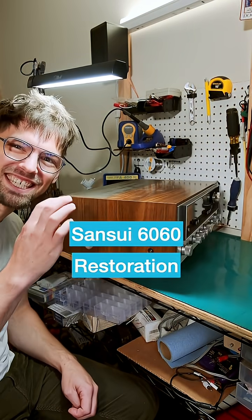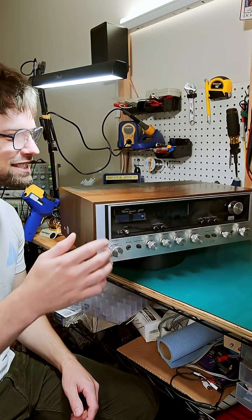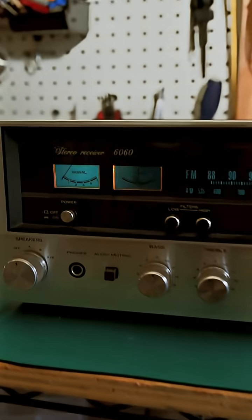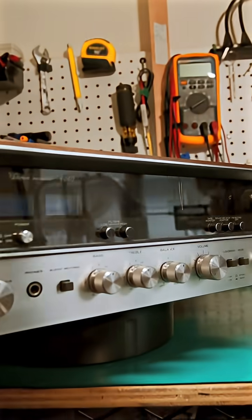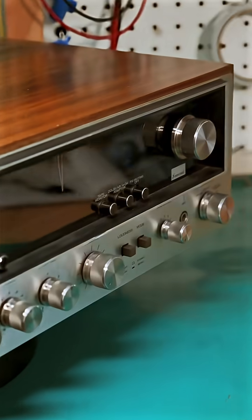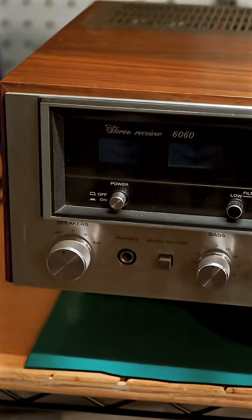This is a Sansui model 6060 brought to me for service because it has a channel out, lamps out, and the client wants it recapped. Released in 1976, the 6060 was a mid-power offering from Sansui rated at 44 watts per channel.